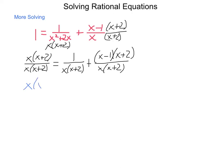So we have x(x+2) = 1 + (x-1)(x+2). Expanding, we get x²+2x = 1 + x² + x - 2. Combining like terms, x²+2x = x²+x-1.